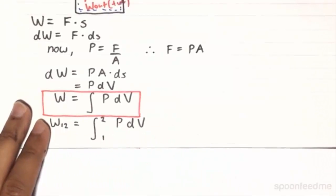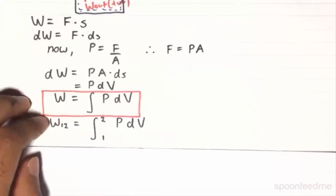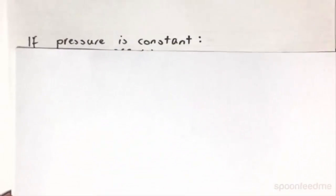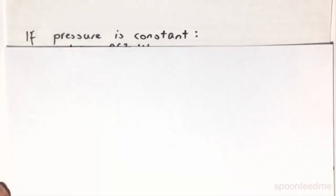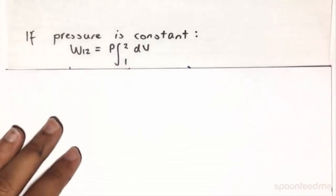Now, this equation yields some interesting situations. The two interesting situations that we will be looking at, and that will be most important for us, is if, number 1, if the pressure is constant. If the pressure is constant, then by basic calculus, the P can be taken out of the integral.